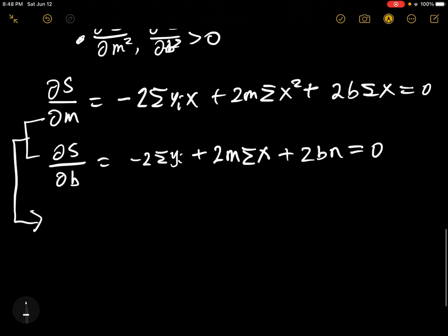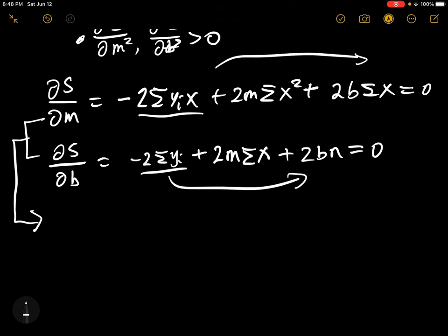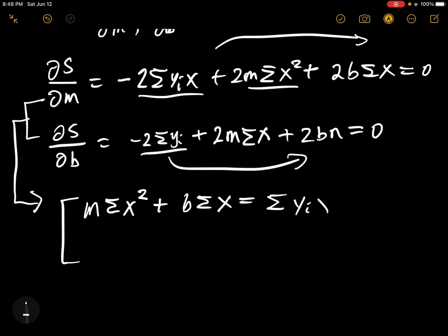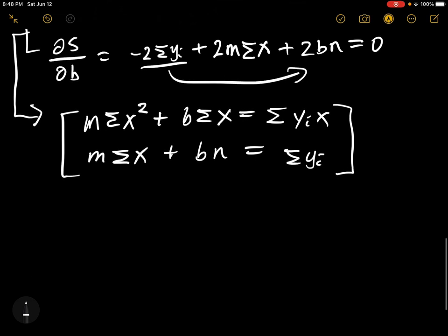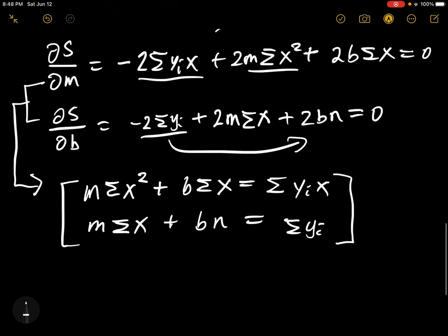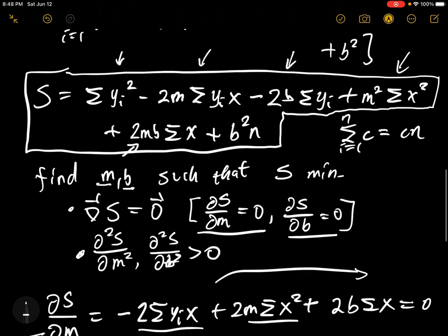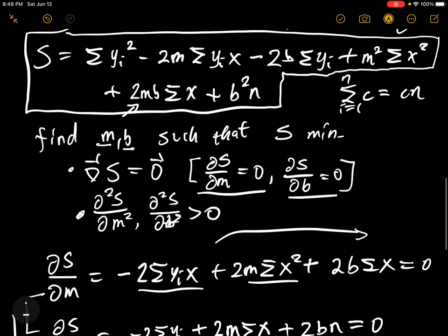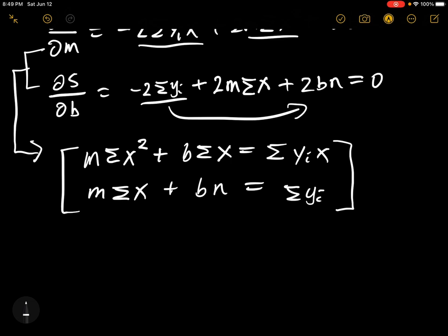We can rewrite this as a system of equations. Moving terms to the other side and dividing every term by 2, we get: m·summation(x²) + b·summation(x) = summation(y_i·x), and m·summation(x) + b·n = summation(y_i). What we're really trying to find are the values of m and b so that s is minimized, giving us the best-fit function for the data points. All we need to do is write this in matrix form.